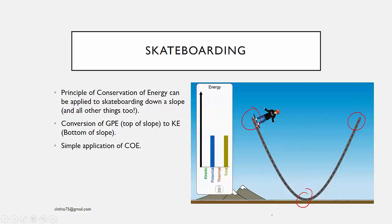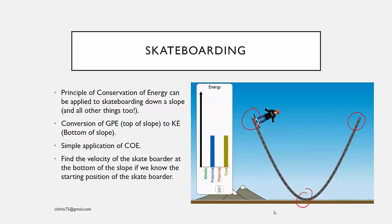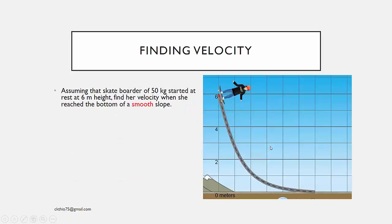A simpler application of conservation of energy would be: find the velocity of the skateboarder at the bottom of the slope if we know the starting position. Assuming a skateboarder of 50 kg started at rest at 6 m height, find her velocity when she reaches the bottom of a smooth slope.